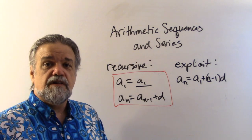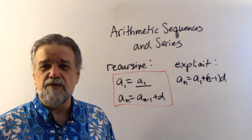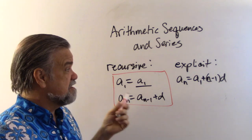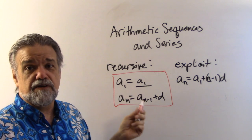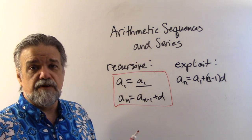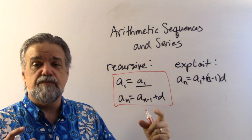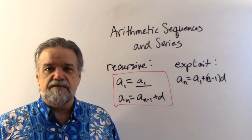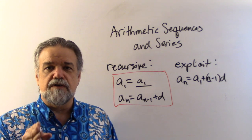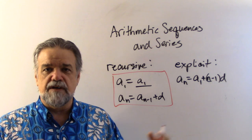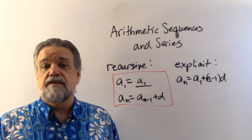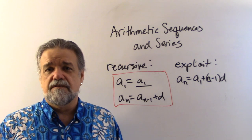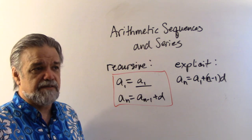The explicit form is a sub n equals a one, whatever a one is, you need to know what that is, plus n minus one times d. So some clever people out there are going to be looking at this going, I don't know, this just looks a whole lot like a linear function. Yeah, it does. It doesn't just look like a linear function. It is a linear function. An arithmetic sequence is a linear function whose domain is the natural numbers, the positive integers. Well, actually, let me fix that. An infinite arithmetic sequence is a linear function whose domain is the positive integers. A finite arithmetic sequence is going to be a linear function whose domain is a finite subset of the natural numbers, of the positive integers.